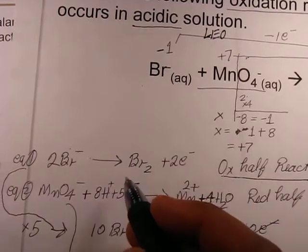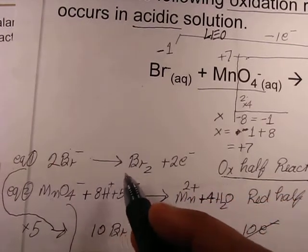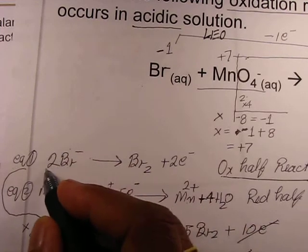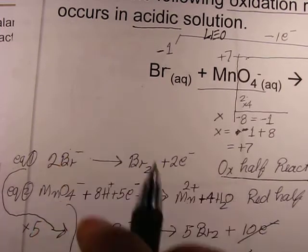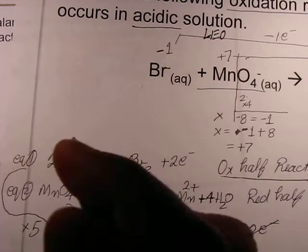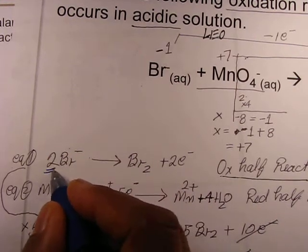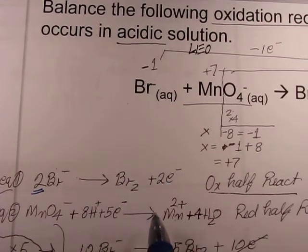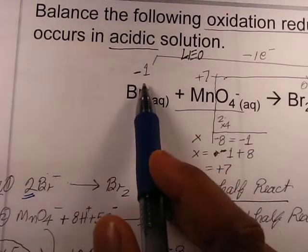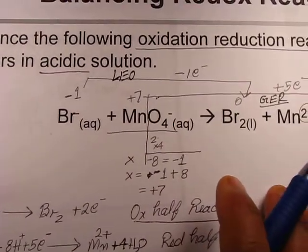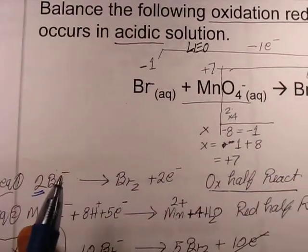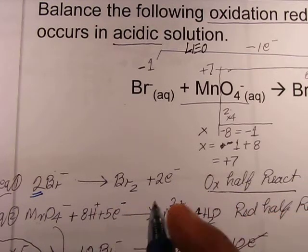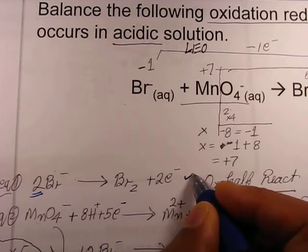There is no oxygen and no hydrogen, so we only have to balance bromine. I added a coefficient of two in front of the bromide ion, and it is balanced now. One bromide ion loses one electron, so with two bromide ions, two electrons come out. The oxidation half reaction is balanced now: 2Br⁻ → Br₂ + 2e⁻.